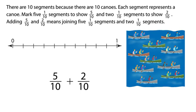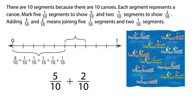There are ten segments because there are ten canoes. Each segment represents a canoe. Mark five one-tenth segments to show five-tenths and two one-tenth segments to show two-tenths. Adding five-tenths and two-tenths means joining five one-tenth segments and two one-tenth segments.